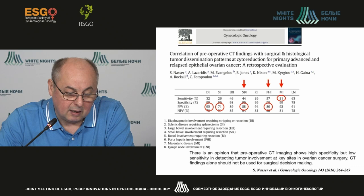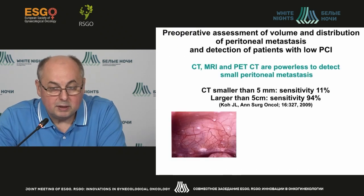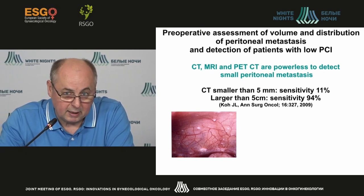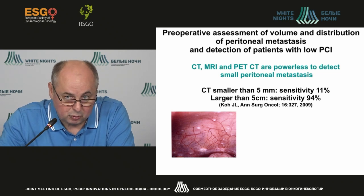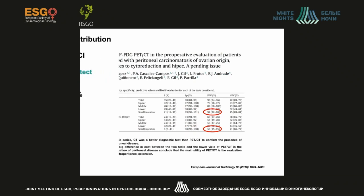CT is especially less sensitive while detecting changes in case of the spleen, mesenteral signs, diaphragm involvement, and less specific while assessing the condition of the lymph nodes. The important aspect is the detection of the peritoneal carcinomatosis, especially visceral carcinomatosis. Please notice, in case of carcinomatosis less than 5 millimeters, the sensitivity of this method is quite low — approximately 11%. This, to some extent, makes the operation non-standard.